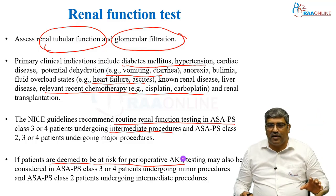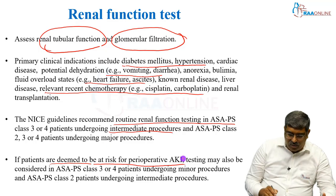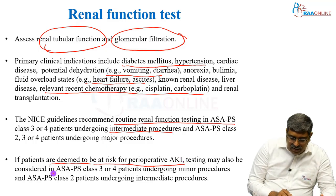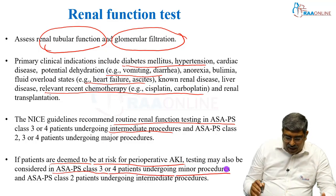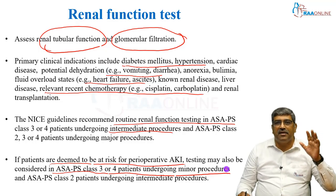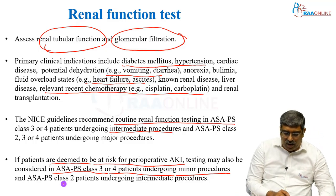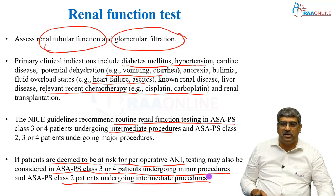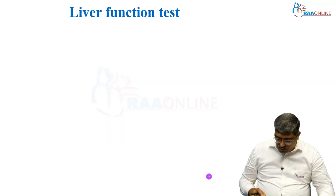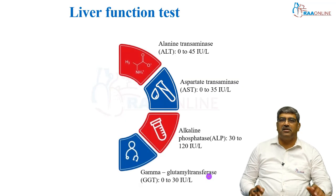If those risk factors are present, testing is indicated for ASA physical status 3 or 4 undergoing even minor procedures, or ASA physical status 2 undergoing intermediate procedures.